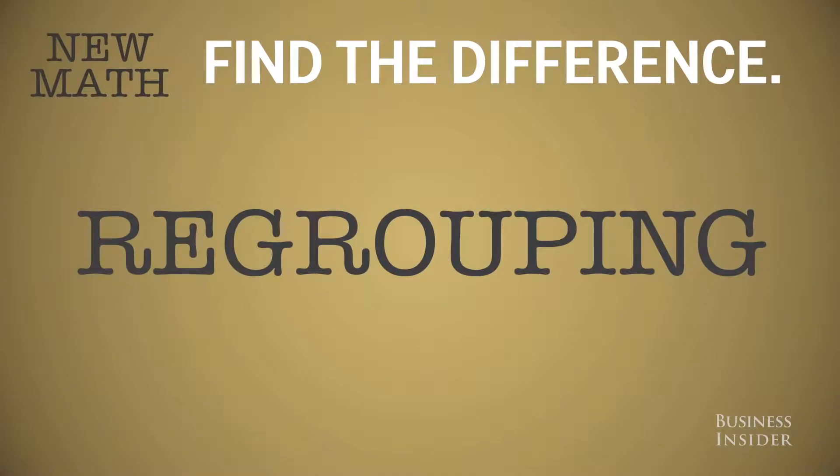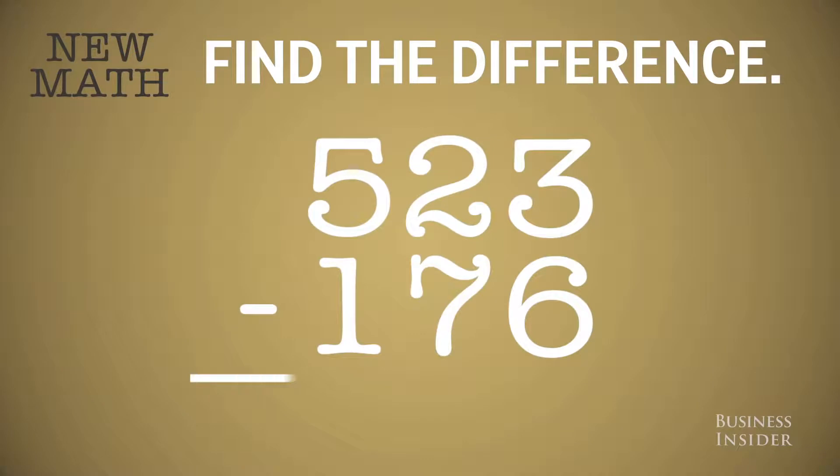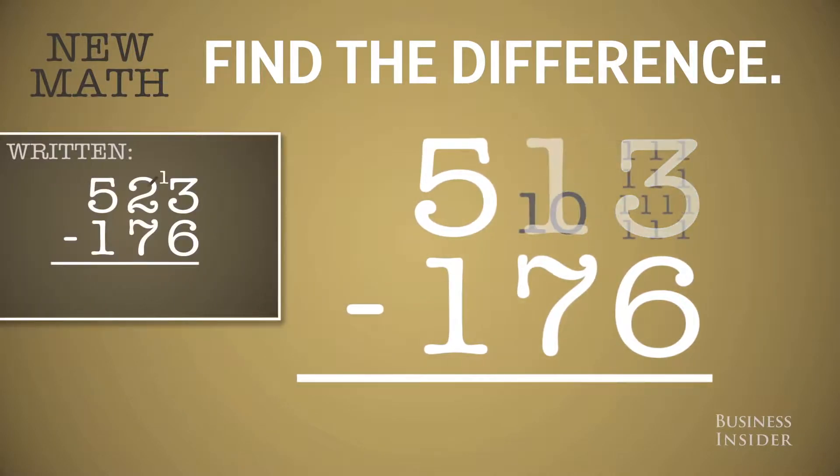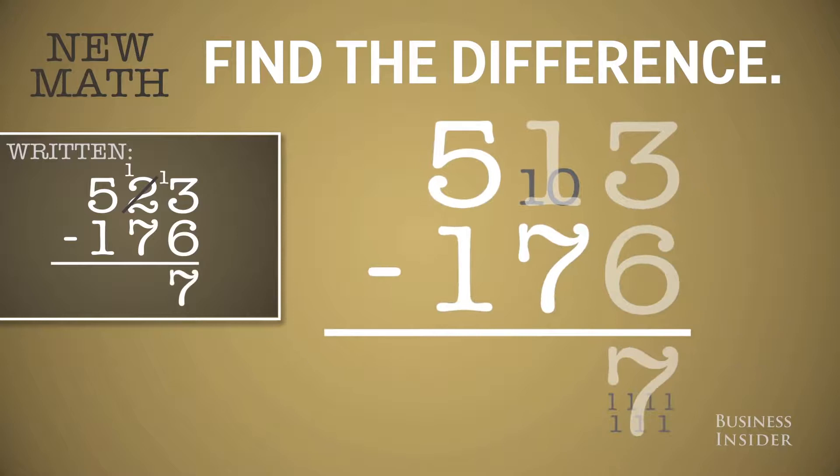New math replaced borrowing and paying back with regrouping. Let's try it. You can't take 6 from 3, so you need to regroup your tens. Instead of 2 tens, you have 1 ten and 10 ones, which you add to your 3 ones. So now 6 ones from 13 ones is 7 ones.